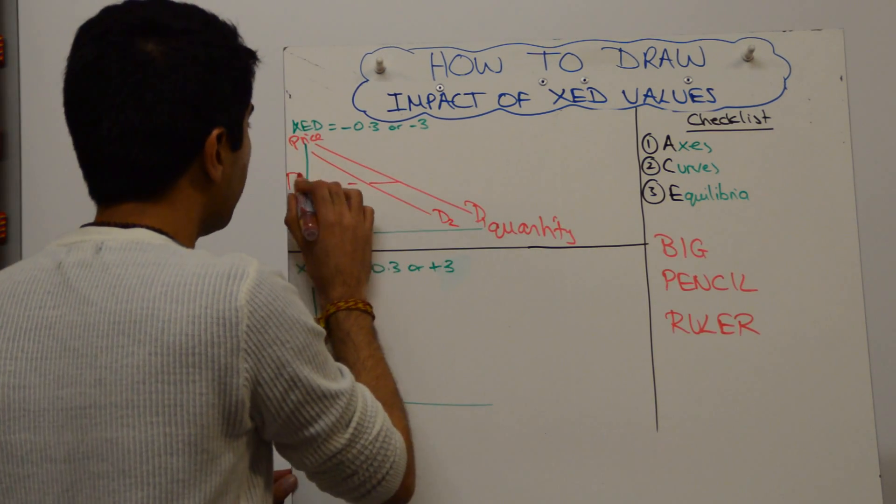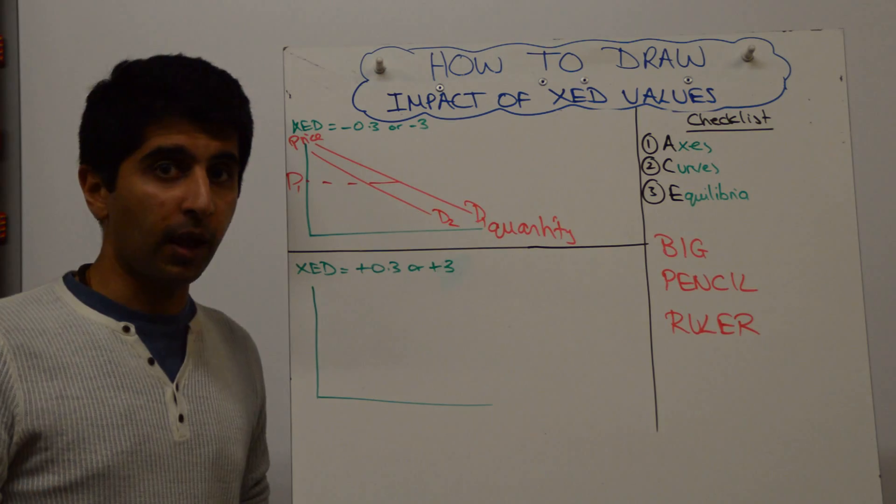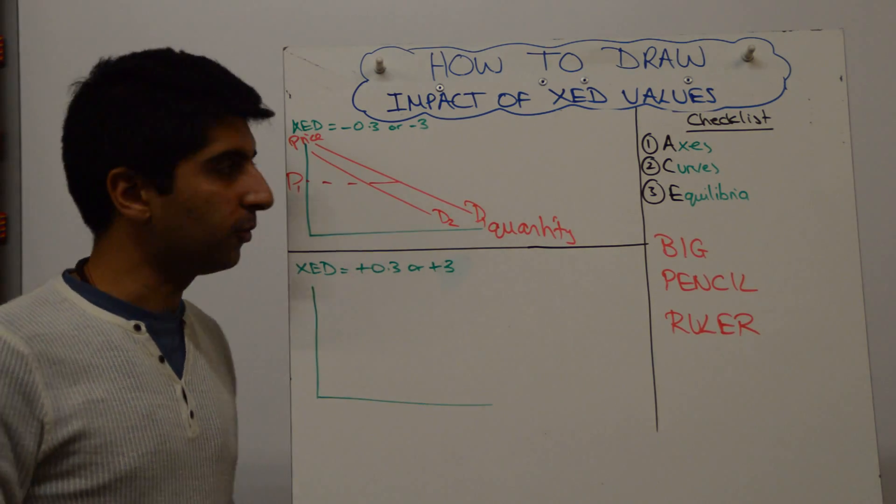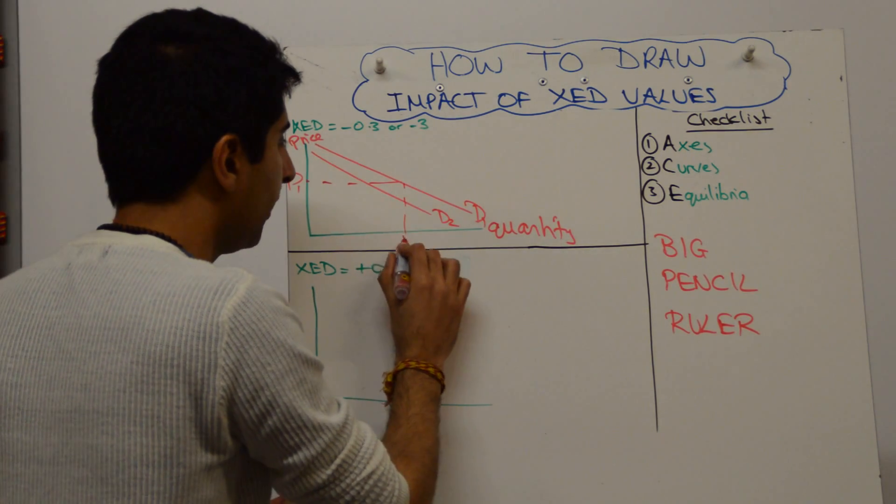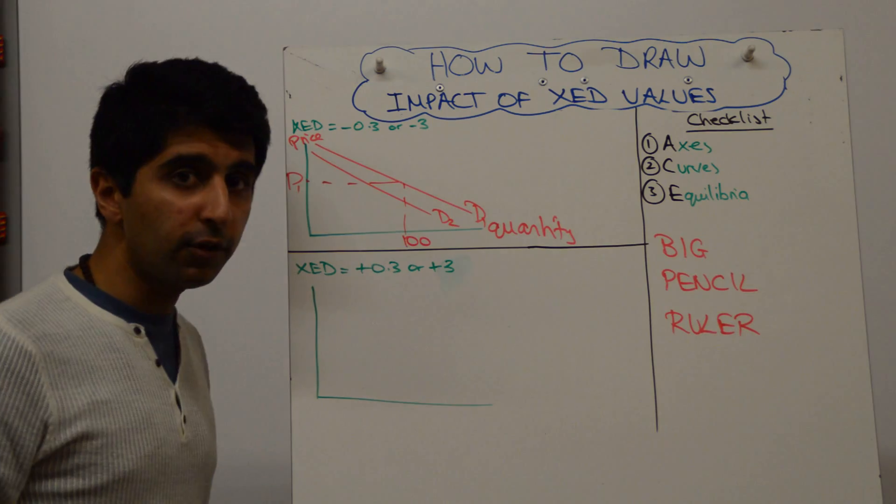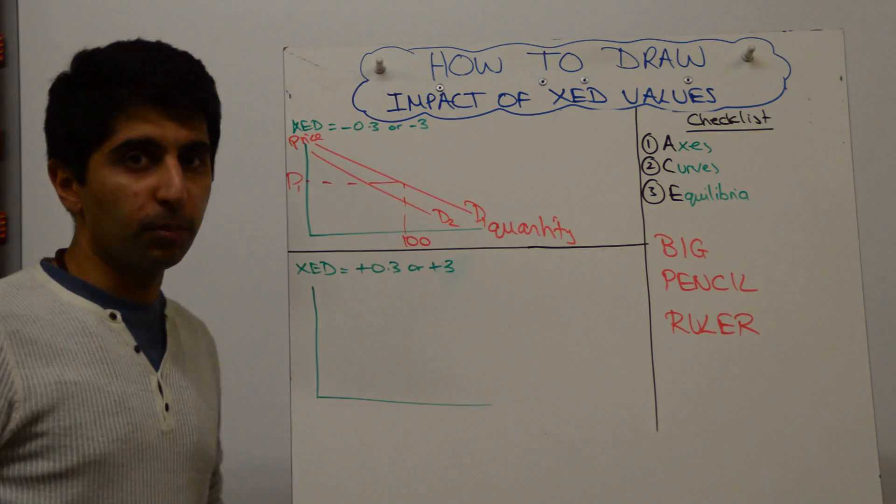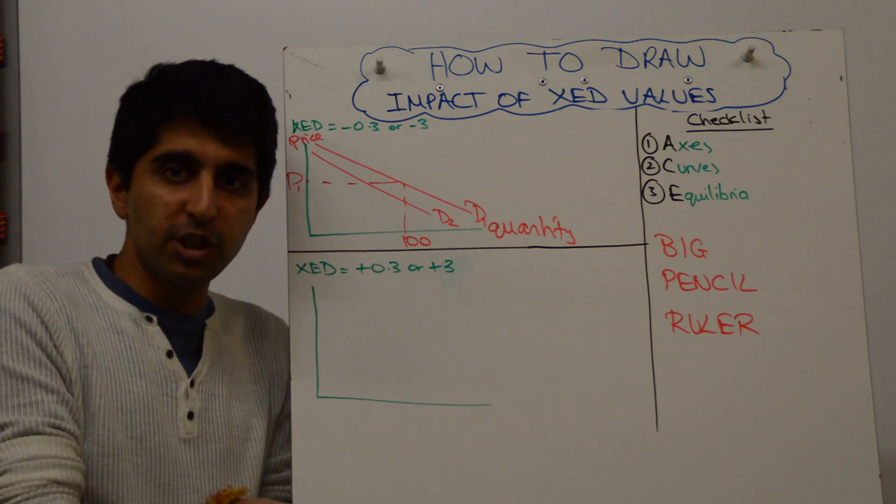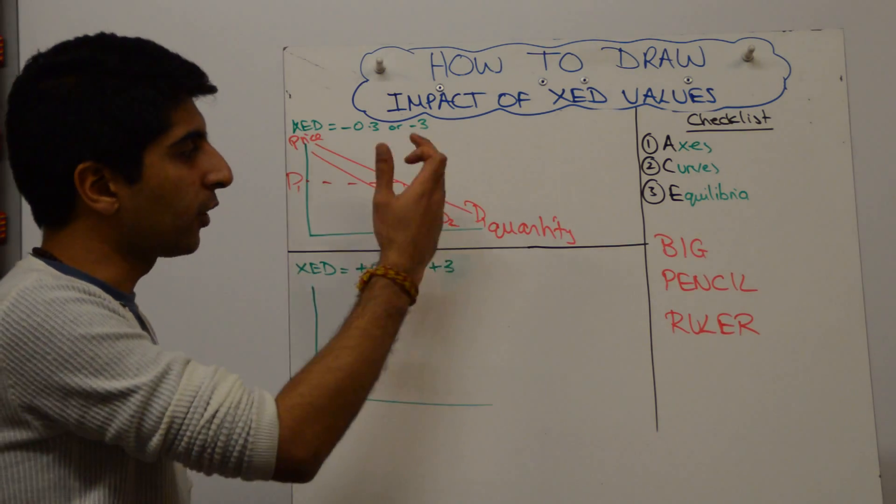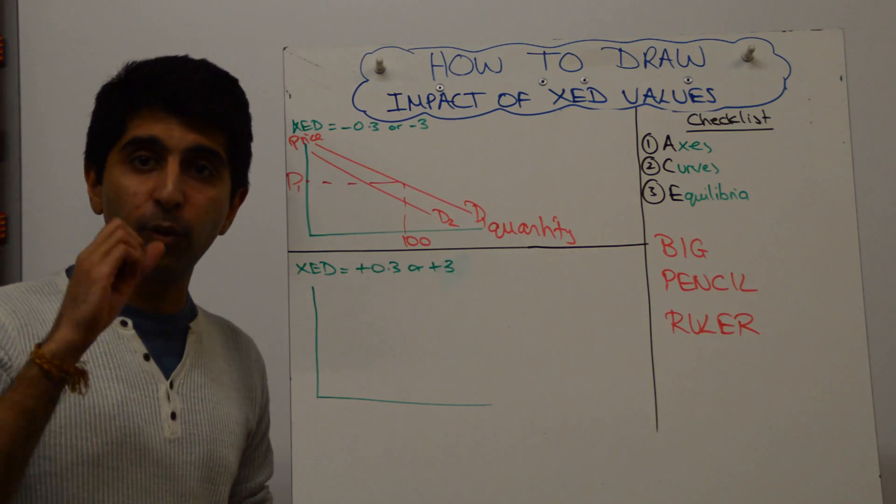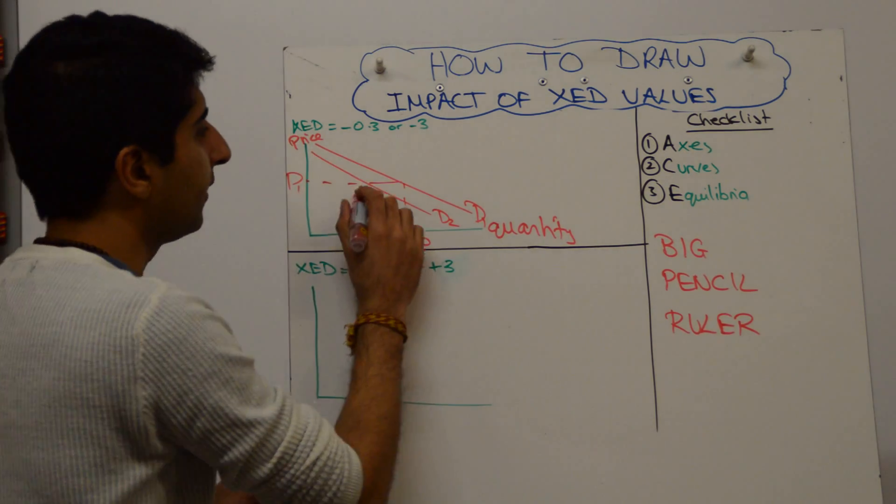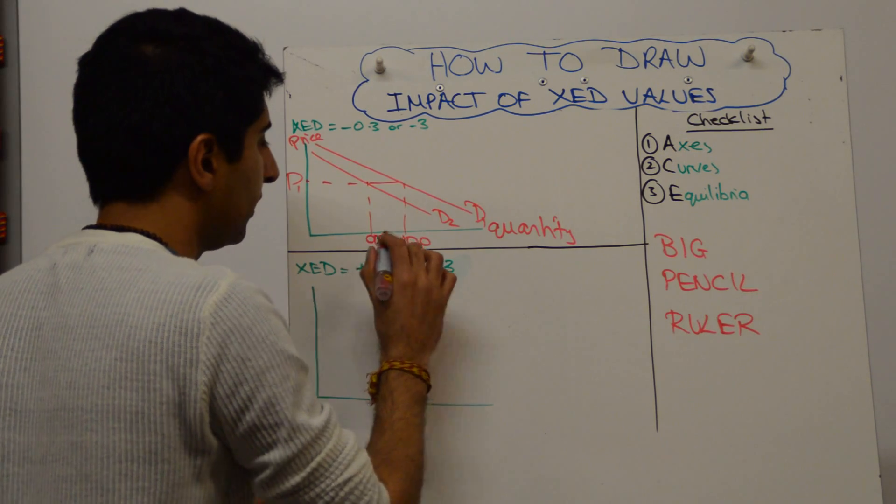So initial price, P1, and that price hasn't changed for Nespresso capsules, it's changed for Nespresso machines. So maybe at D1, the quantity demanded was at 100. If the XED is minus 0.3, then if the price of machines, Nespresso machines, has gone up by 10%, then the quantity of capsules is going to fall by 3%, which here is going to take quantity down to 97.